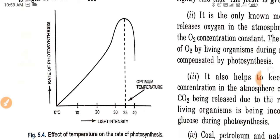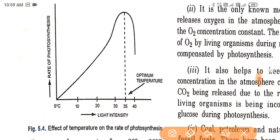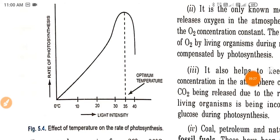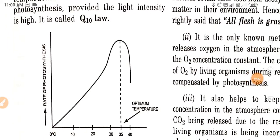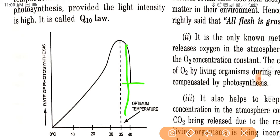As you can see in the graph showing the effect of temperature on the rate of photosynthesis, the rate increases up to the optimum temperature, then starts decreasing above 40°C and stops at higher temperatures.